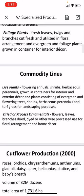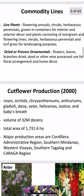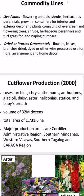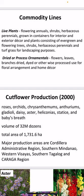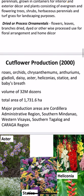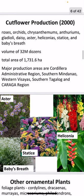Other commodity lines include live plants, which are flowering annuals, shrubs, and herbaceous perennials grown in containers for interior and exterior decor, and landscape plants consisting of evergreen and flowering trees, shrubs, herbaceous perennials, and turf grass for landscaping purposes. Lastly, we have dried or processed ornamentals which include flowers, leaves, and branches that are dried, dyed, or otherwise processed and used for flower arrangement and home decor.